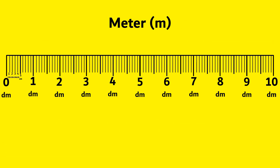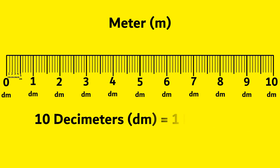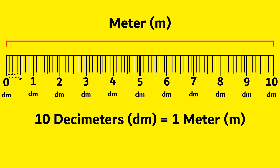Next, meter. 10 decimeters is equal to 1 meter. From 0 decimeter to 10 decimeters is equal to 1 meter.